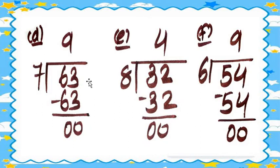Question 2e: 32 divided by 8. In the table of 8: eight ones are 8, eight twos are 16, eight threes are 24, eight fours are 32. So 32 minus 32 equals zero. The quotient is 4.